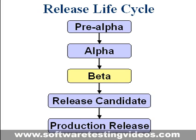Beta level software generally includes all features but may also include known issues and bugs of a less serious variety. Release candidate. The term release candidate refers to a version with potential to be the final product, ready to release unless fatal bugs emerge. In this stage, the product features all design functions and no non-showstopper class bugs. At this phase, the product is usually code complete.